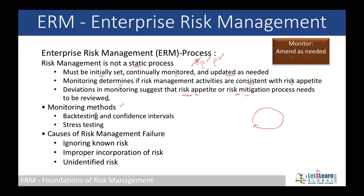Monitoring methods can be backtesting — we will discuss in detail — and confidence interval levels like 90%, 95%, and stress testing to what extent we can identify the controls. There are some causes for failure in risk management. When management is not concerned about certain risks and is not very strict about them, that is nothing but accepting the risk by ignoring it. Any known risk that is ignored is effectively accepted.